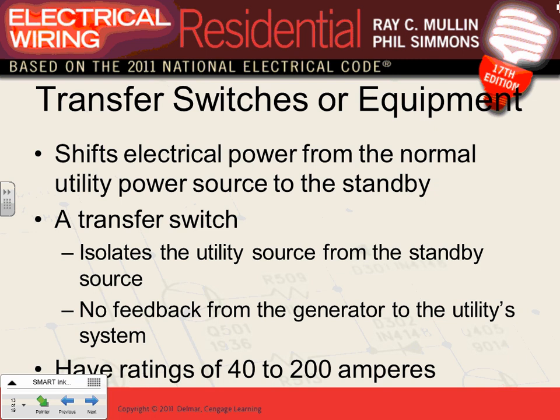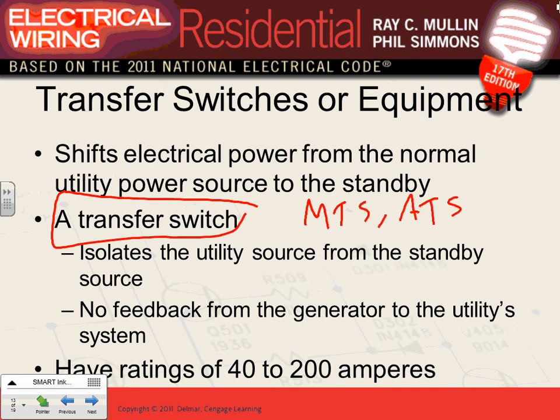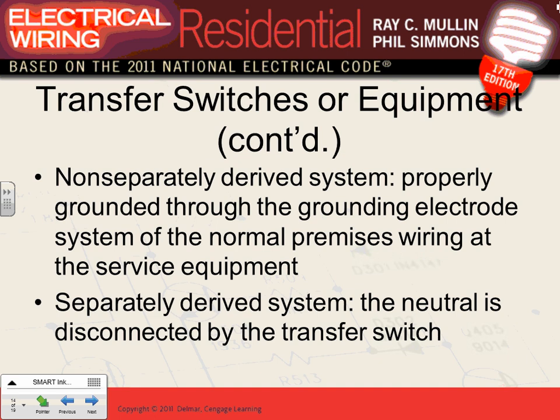The transfer switch — manual or automatic — transfers the load from utility to standby and back. The most important thing is that it always isolates the utility from the standby system first to prevent back-feeding. Transfer switch sizes typically range from 40 to 60 amps for dwelling applications. Standard disconnect sizes used in the industry are 30, 60, 100, and multiples of 100 amps.